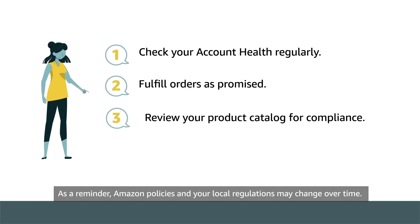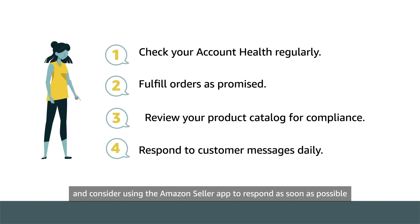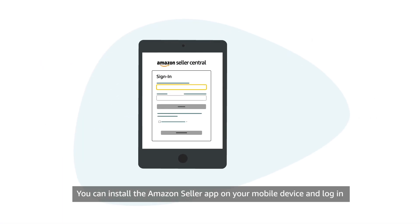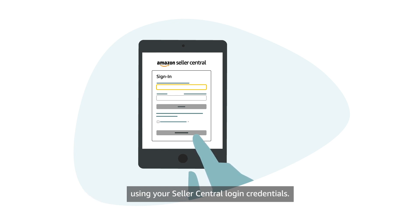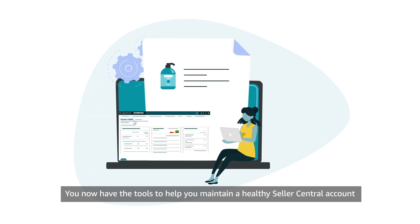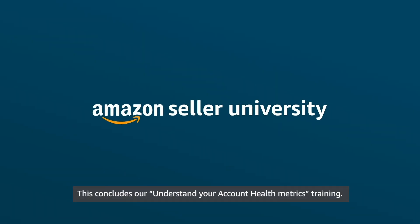As a reminder, Amazon policies and your local regulations may change over time. Finally, respond to customer messages within 24 hours, and consider using the Amazon Seller app to respond as soon as possible and from almost anywhere. You can install the Amazon Seller app on your mobile device and log in using your Seller Central login credentials. You now have the tools to help you maintain a healthy Seller Central account and create a great customer experience. This concludes our Understand Your Account Health Metrics training. Thank you and happy selling in the Amazon store.